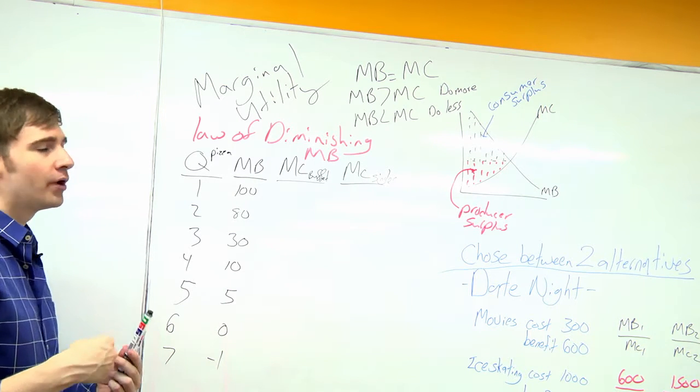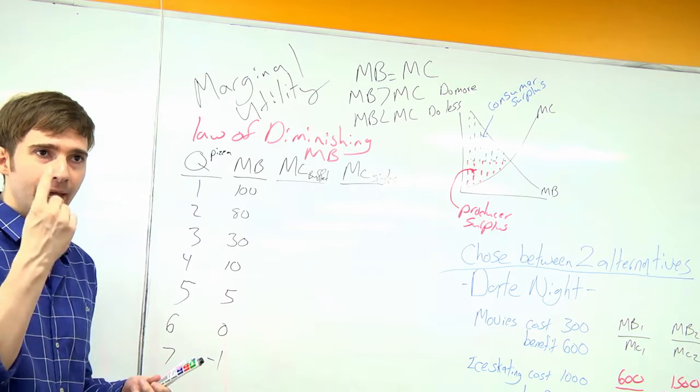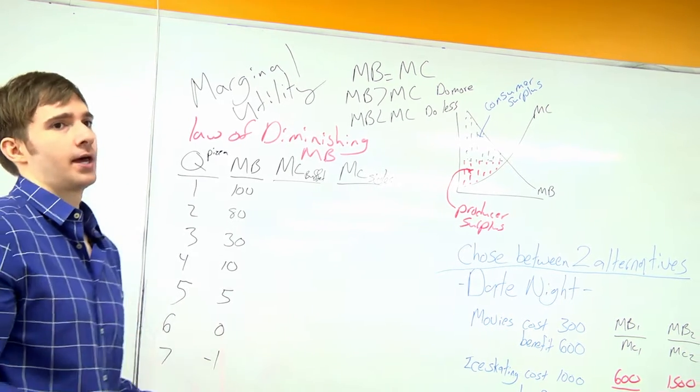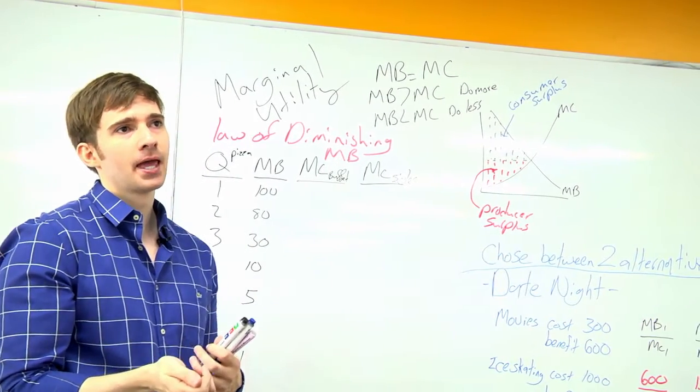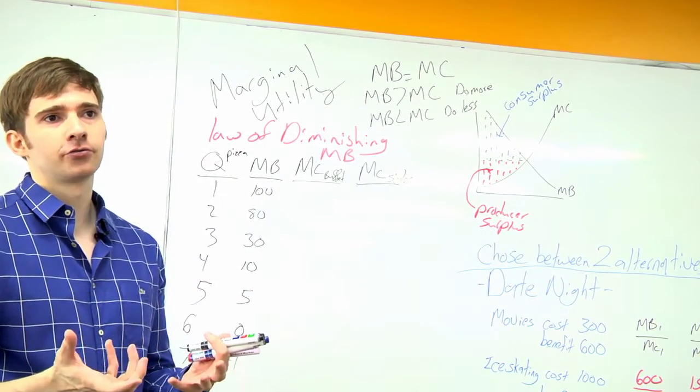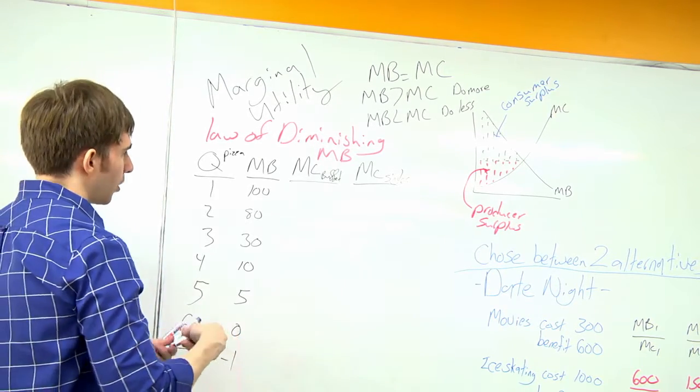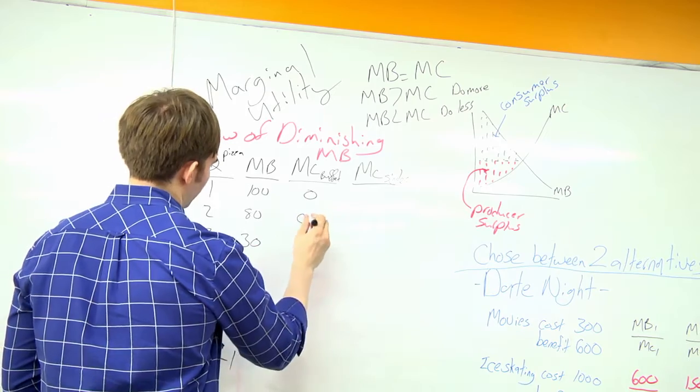If we go to a buffet, we pay to get into the buffet. Once we're in the buffet, I can grab the slice of pizza and my cost is free. Each slice I grab, my marginal cost is going to be zero, zero, zero.